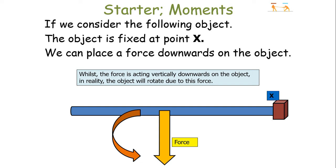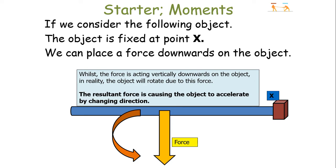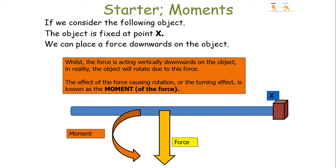What will happen is that whilst this force is acting vertically downwards, in reality this force will cause the object to rotate because it's fixed at point x. So due to being fixed at point x, this linear force will cause a rotational effect. The resulting force is causing the object to accelerate by changing direction. The effect of a force causing a rotation or turning effect is known as the moment of the force.